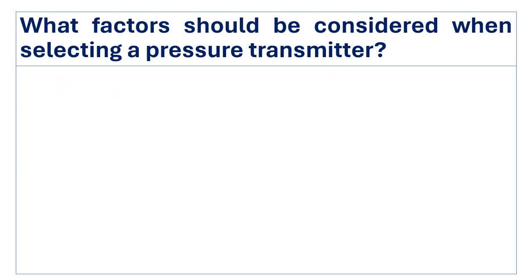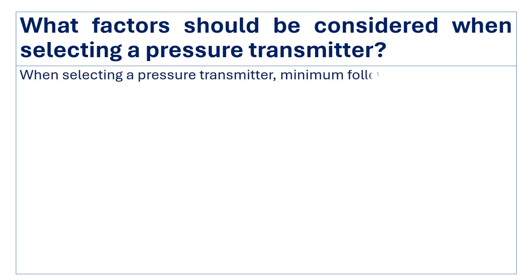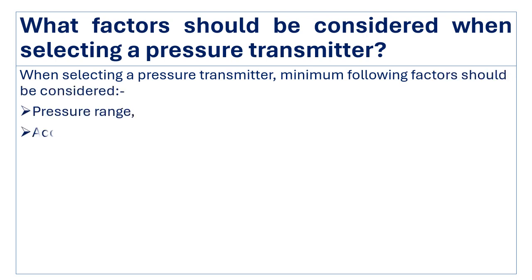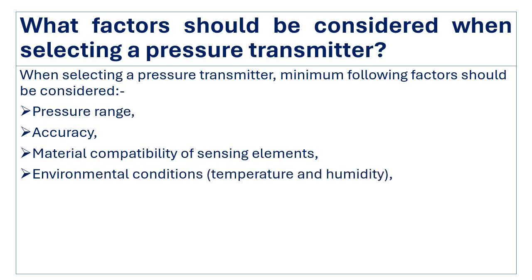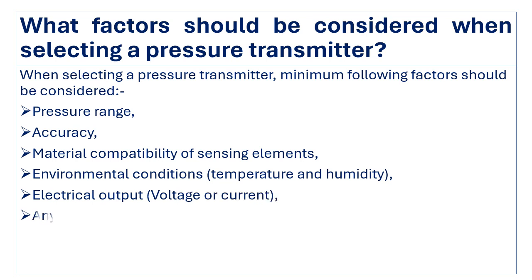What factors should be considered when selecting a pressure transmitter for a specific application? When selecting a pressure transmitter, the following factors should be considered: pressure range, accuracy, material compatibility of the sensing element, environmental conditions like temperature and humidity, electrical output — voltage or current — and any other application-specific requirements.